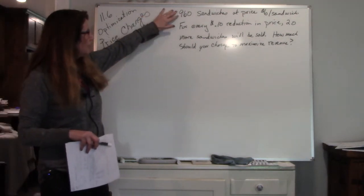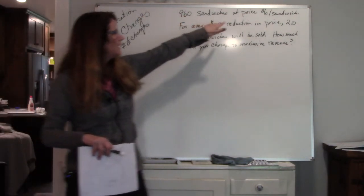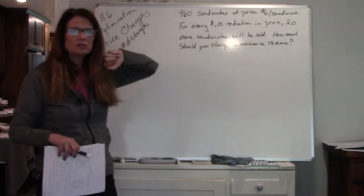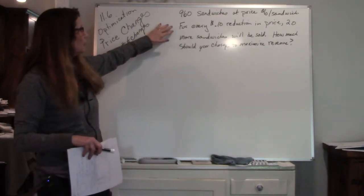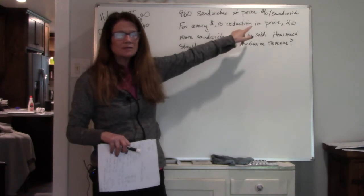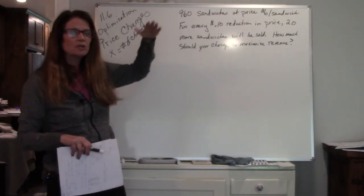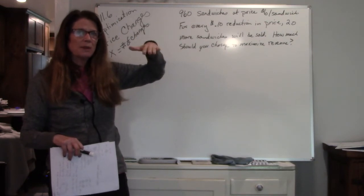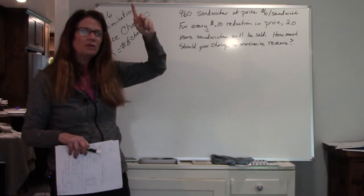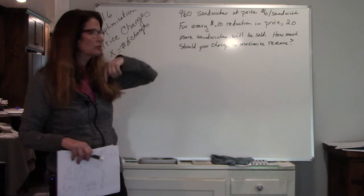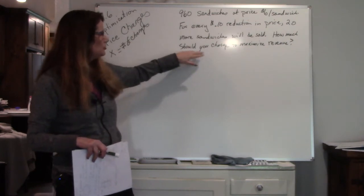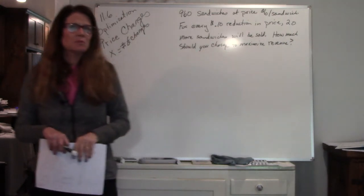You have 960 sandwiches. Each sandwich is, you charge $6 a sandwich. For every 10 cent reduction in price, 20 more sandwiches will be sold. So every time you reduce the price by 10 cents, you have seen that you sell 20 more sandwiches.